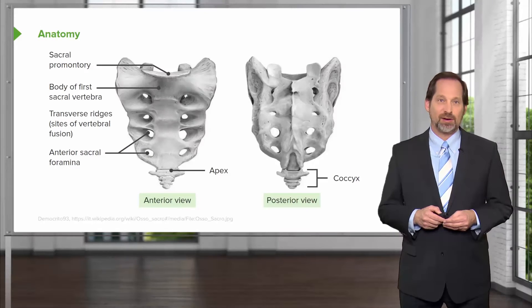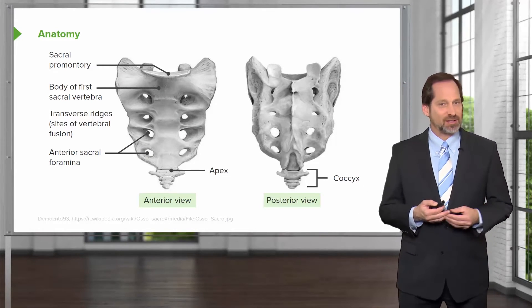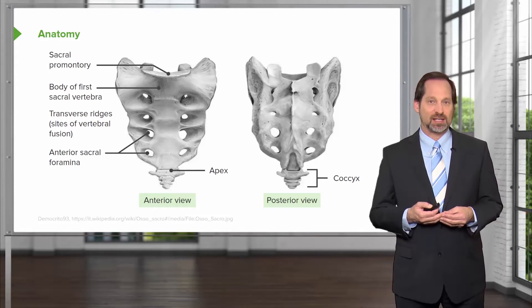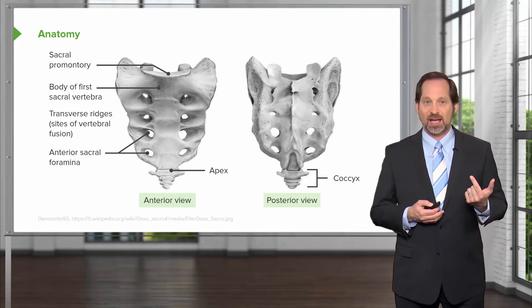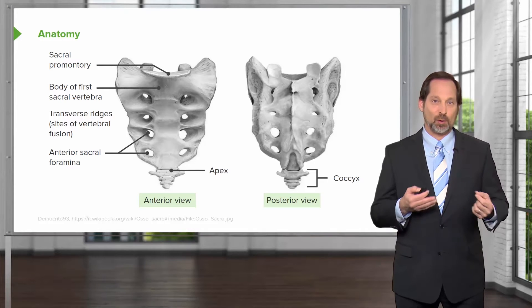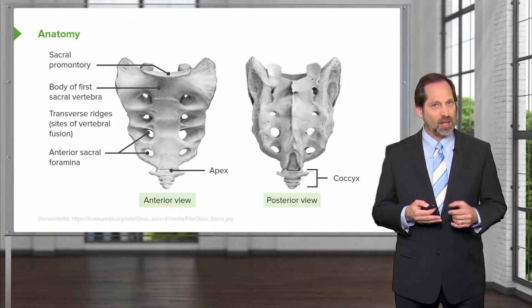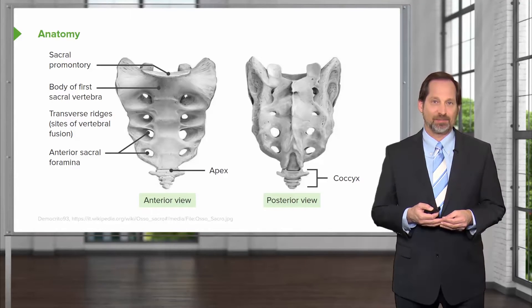When I focus on the sacrum, I always start with a seated flexion test. I look at the sacral sulcus — what's deep, what's anterior — and I look at the inferior lateral angle. Those are the three tests you're going to do again and again.